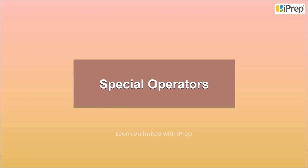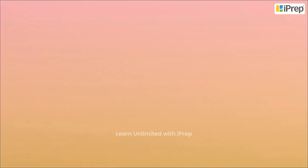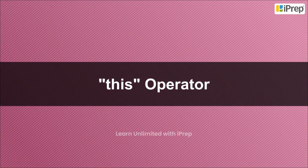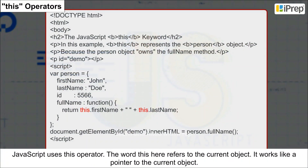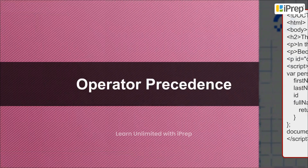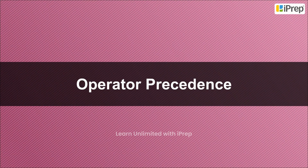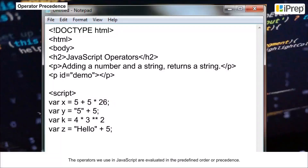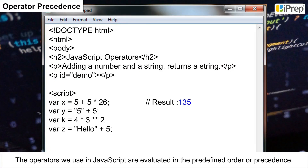Special operators: JavaScript uses the 'this' operator, where the word 'this' refers to the current object — it works like a pointer to the current object. Operator precedence: the operators used in JavaScript are evaluated in a predefined order or precedence.